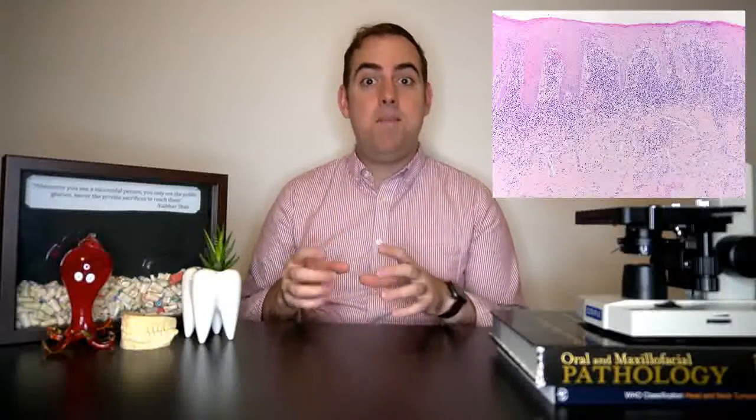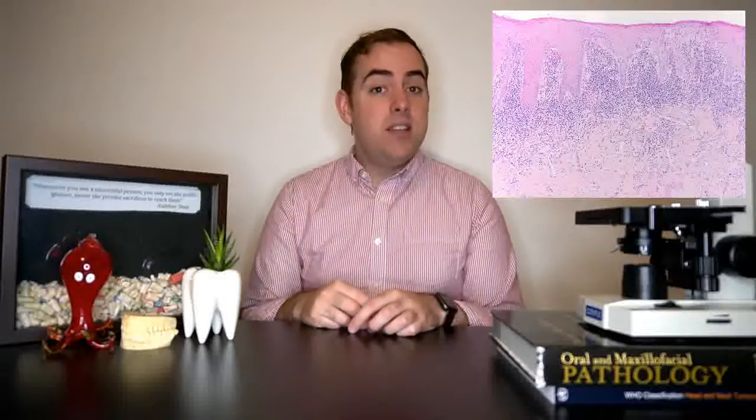Lichen planus on biopsy under the microscope is going to show sawtoothing of the rete ridges, where the epithelium looks like the teeth of a saw. There is a lymphocytic band — a dense area of lymphocytes — and sometimes an eosinophilic or red outline to the basement membrane around those saw teeth. We also see exocytosis, where inflammatory cells are present within the epithelium. Lichen planus in any of its forms, including desquamative gingivitis, is exceedingly common in my practice.